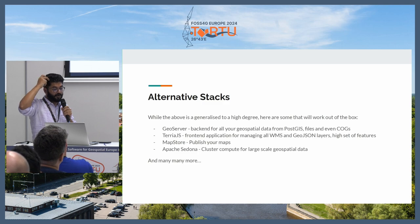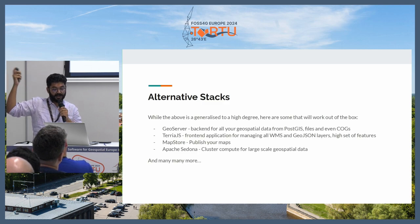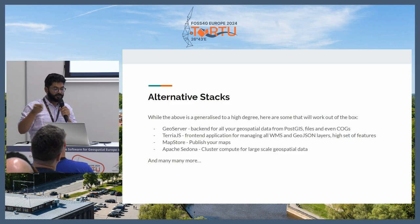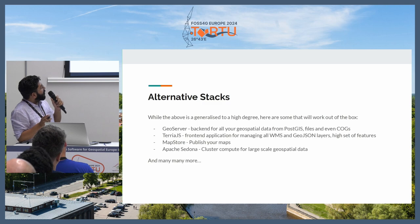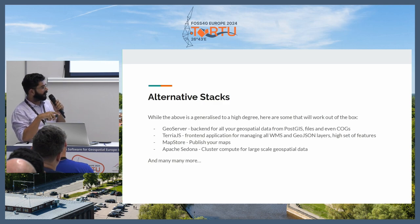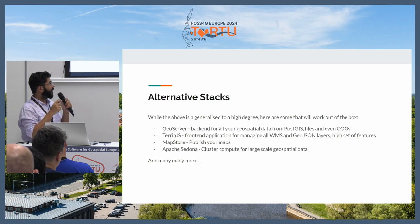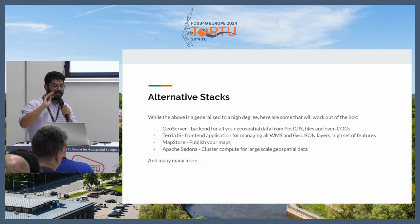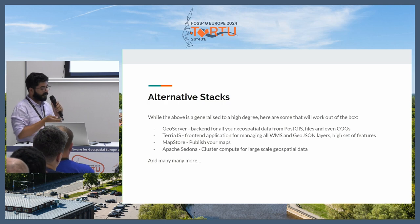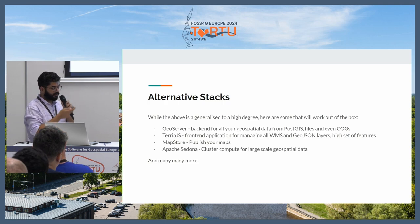Some alternatives worth mentioning: GeoServer is great for your back-end data layer — it can connect to PostGIS and your static server. If you just want a data back end to load data while focusing on the front end, GeoServer works well. TerriaJS is relatively new; it abstracts a lot of Cesium complexity, so if you have a lot of 3D data, start with TerriaJS before jumping straight to Cesium. MapStore and Apache Sedona are also tools I've heard good things about.